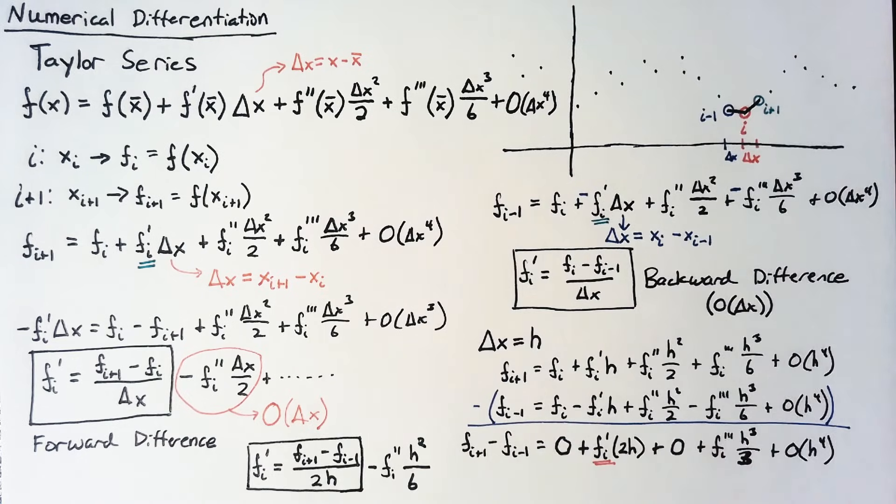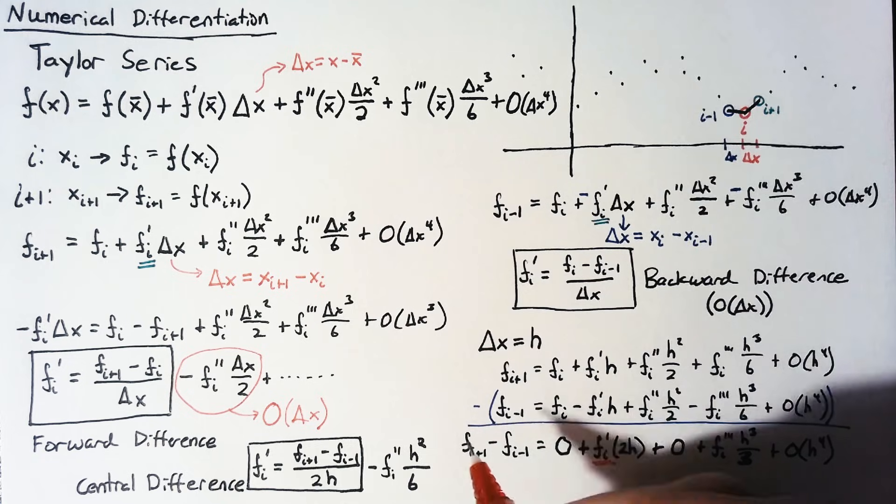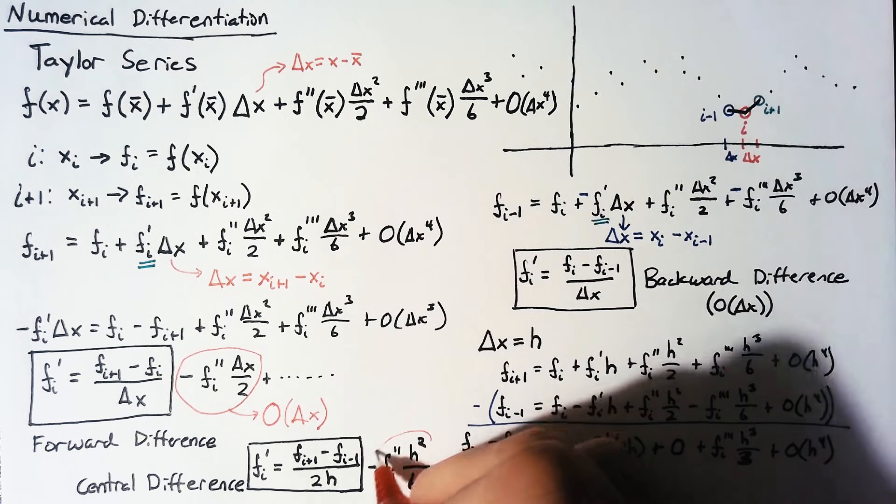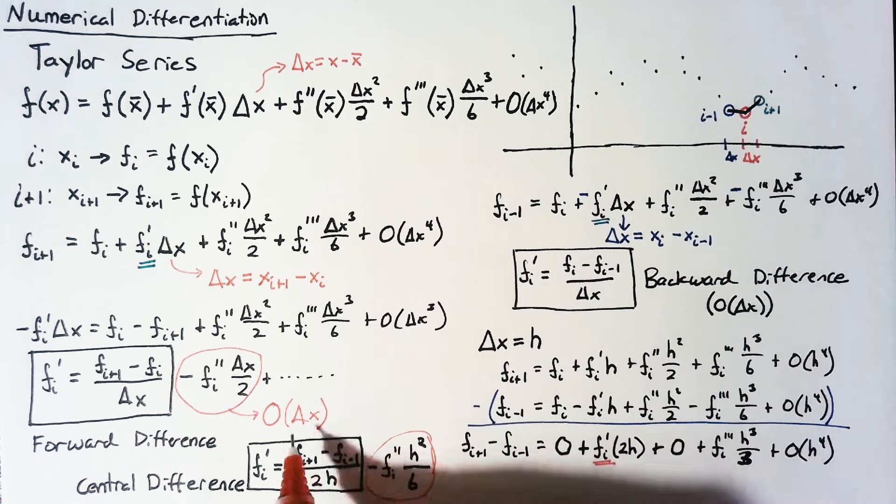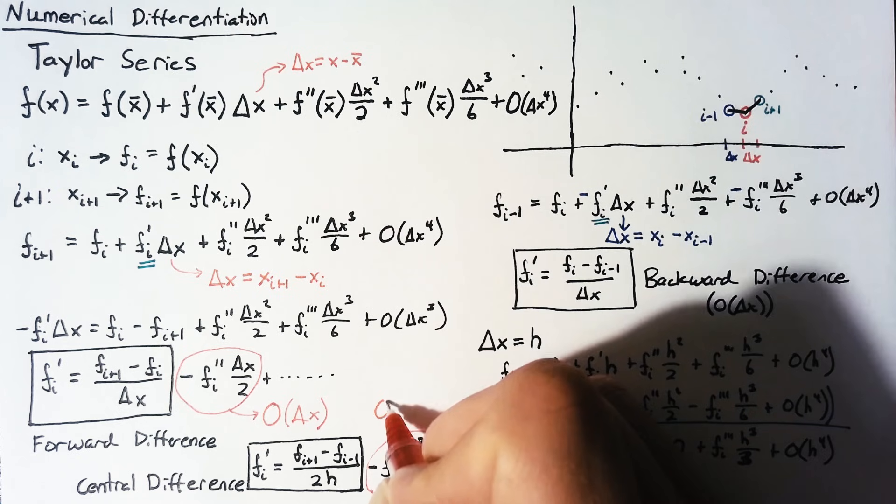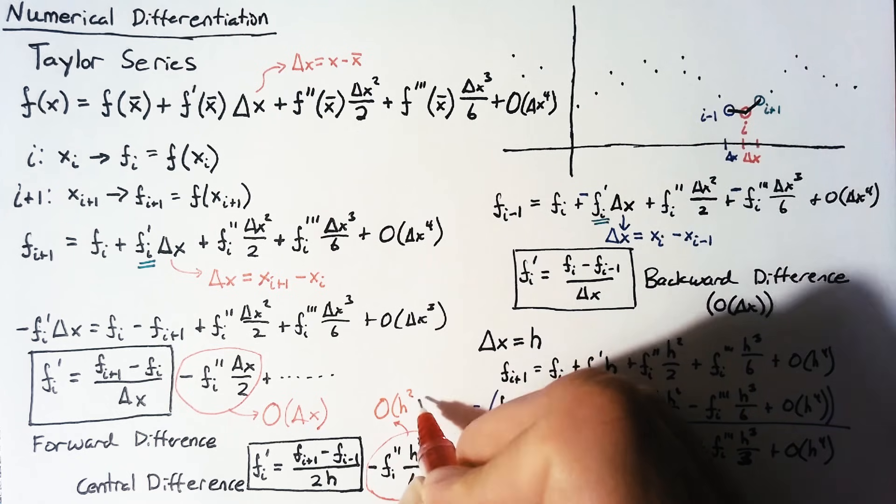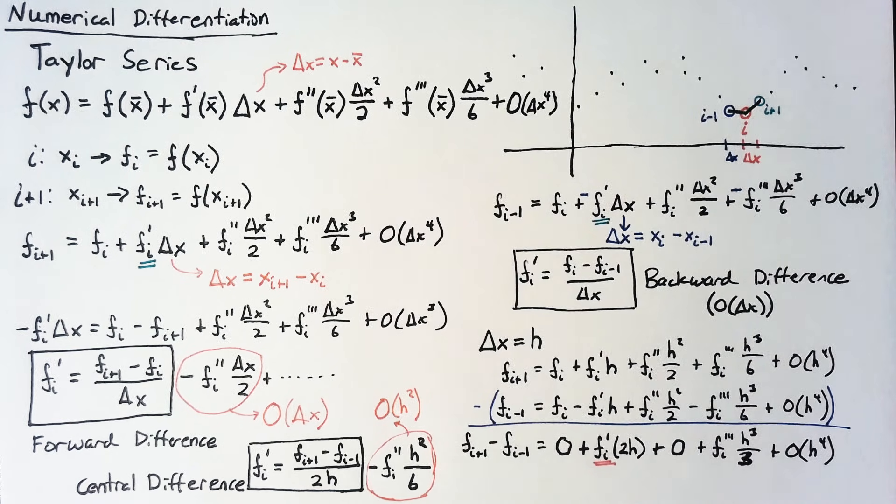So, this right here is our central difference. And the special thing about it is that we no longer have an order of delta x, or just h. But this time, we actually have an order of h squared. And if you're looking for a quick and dirty solution to find the numerical derivative, this is the thing that is going to be used most often.